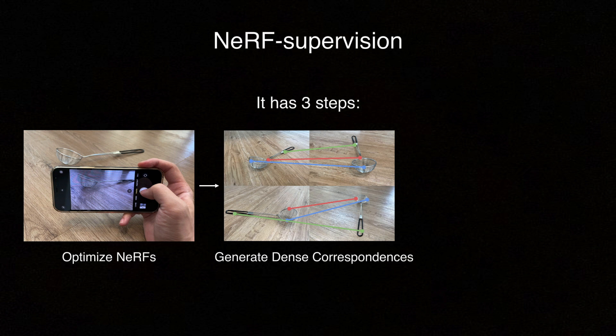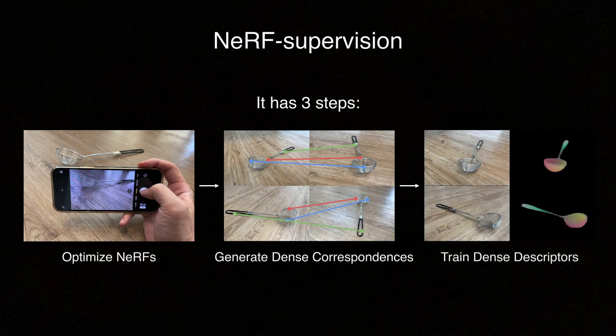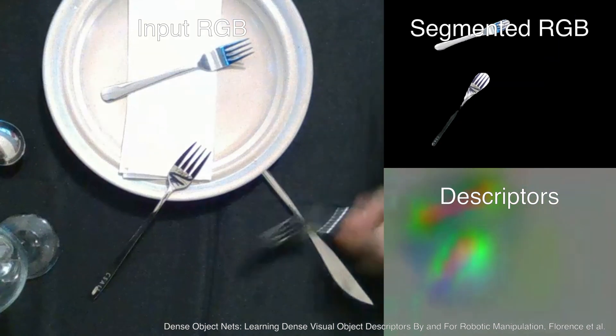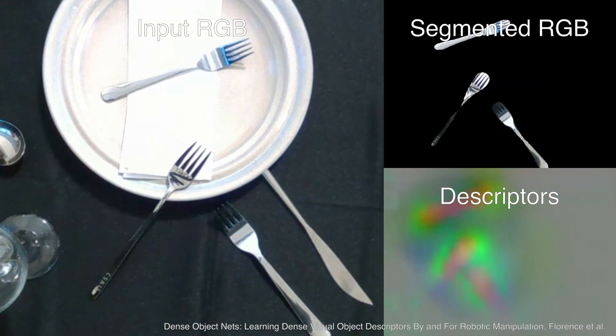The final step of our pipeline is to train a dense correspondence model. There's no limitation on the model architecture, so users can use their favorite model for this step. In this project, we use the correspondence model proposed in Florence et al. On the left, we show the input RGB image. On the right, we show the segmented RGB image and the dense descriptors predicted by our dense correspondence model.